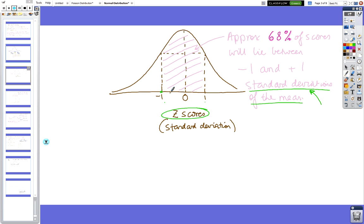This part of the curve in this section here is the biggest part of the curve, and 68% of the scores will lie between plus and minus 1. That's where most kids sit.